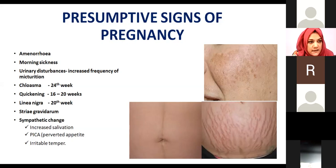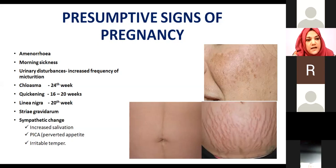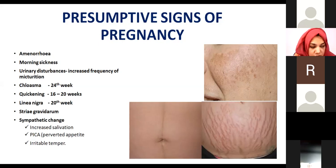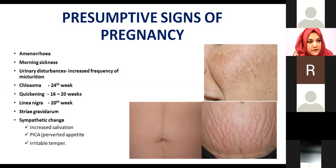The second presumptive sign is morning sickness, which is much more appreciated in a primigravida — a first-time mother. In the first trimester, the signs are most visible: inability to eat, continuous nausea, headache, reduced appetite, and vomiting. Morning sickness is most appreciable in a primigravida in the first trimester.